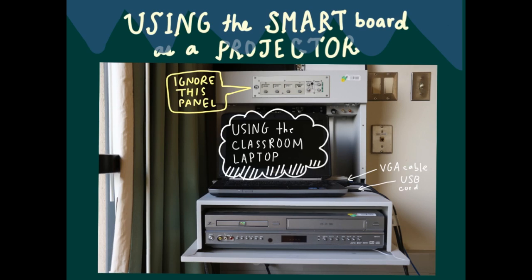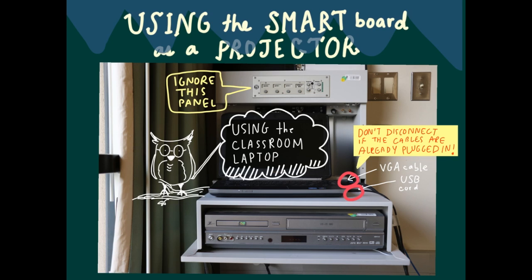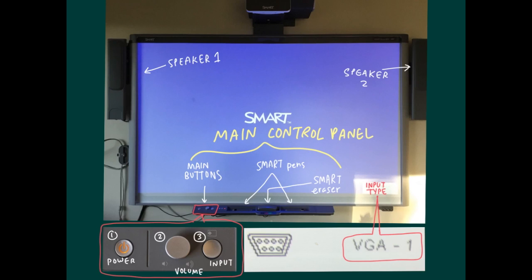If you are using the classroom laptop to project your file, make sure the black VGA cable is connected to the VGA port and the black USB cable is connected to the corresponding USB port on your computer. Press the input button near the power button and select the option VGA1. The input type will appear in the lower right hand corner of the screen.